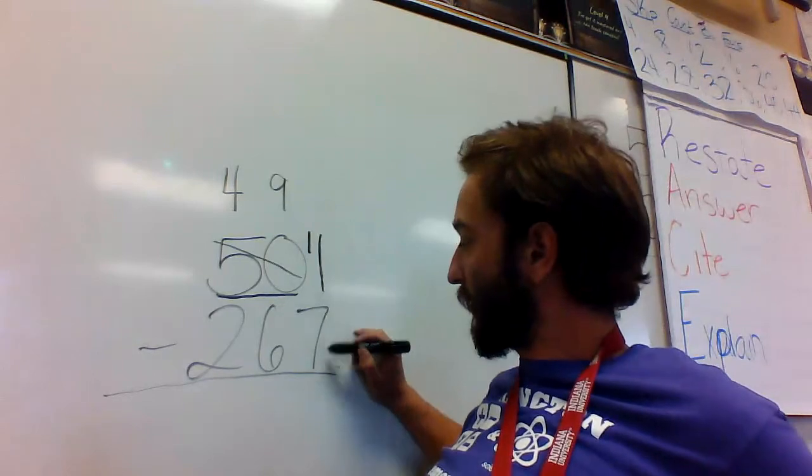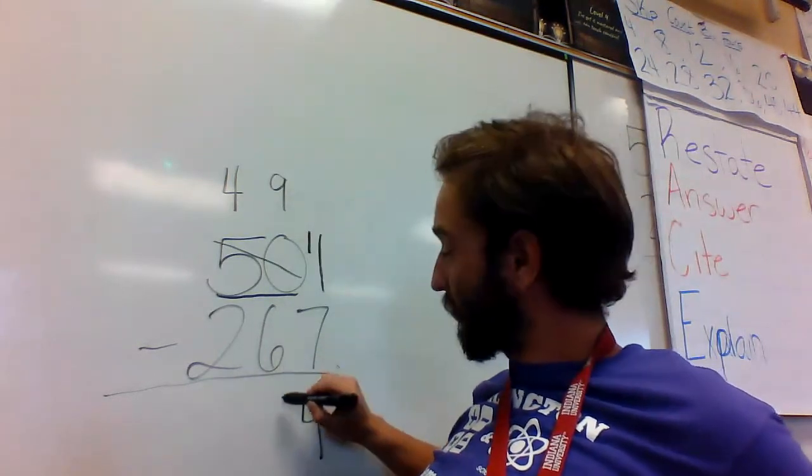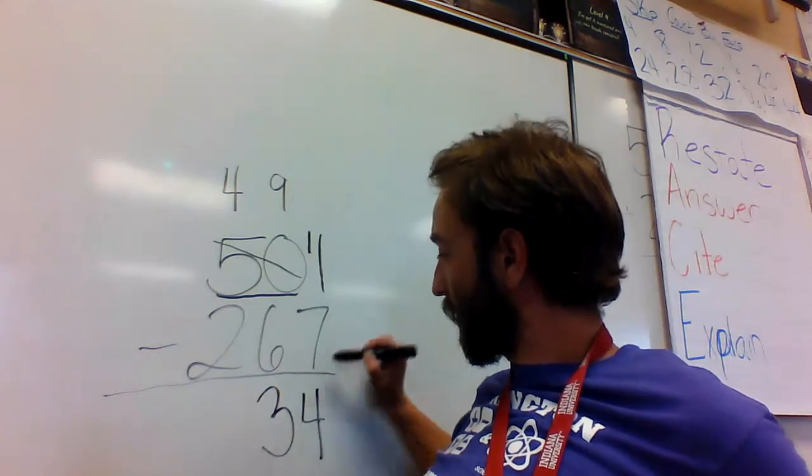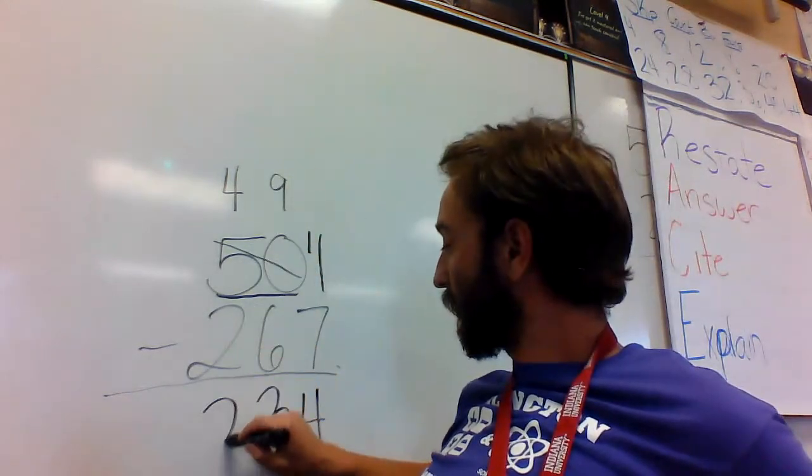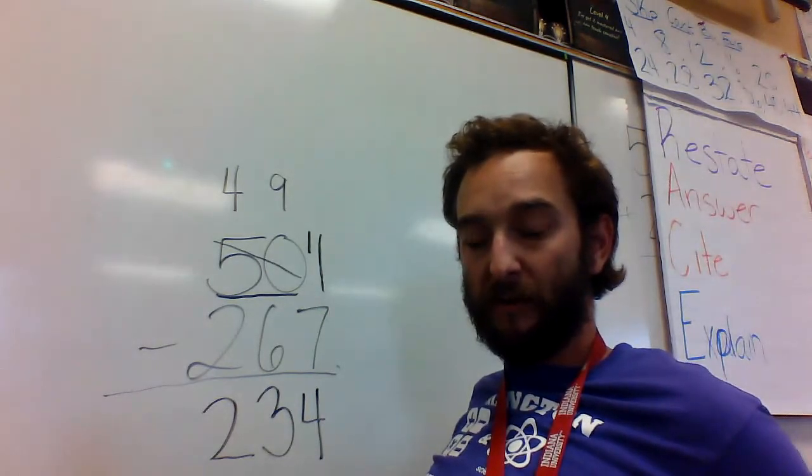11 minus 7 is 4, 9 minus 6 is 3, 4 minus 2 is 2. So I have 234 as my answer.